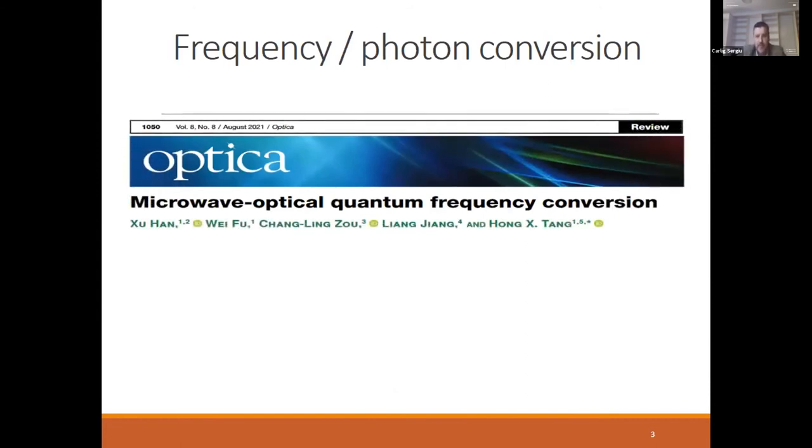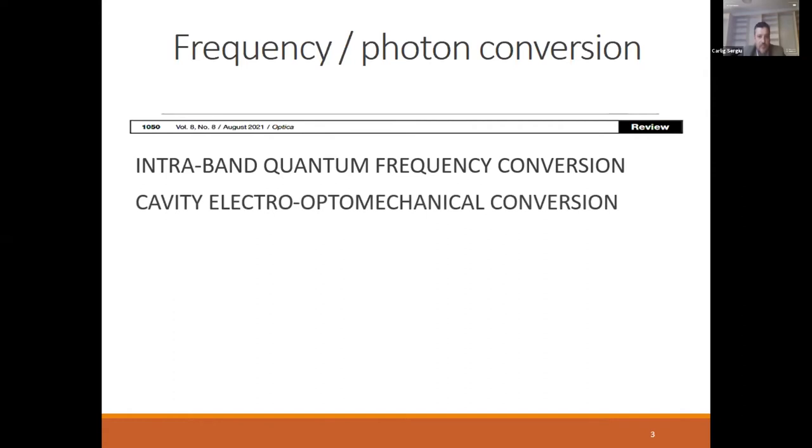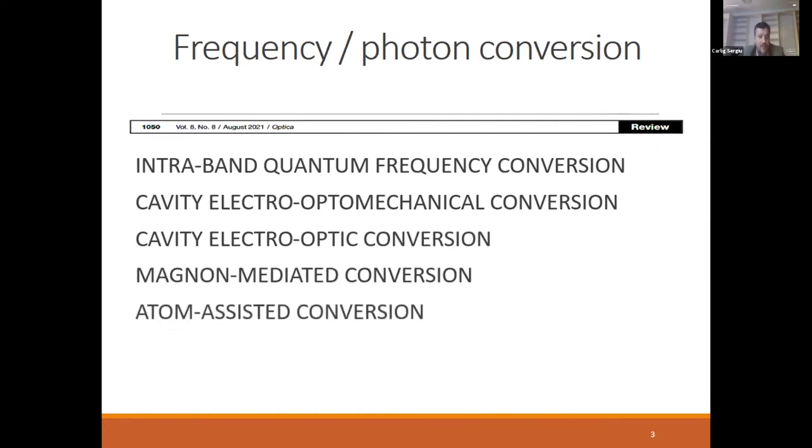A review for frequency conversion appeared in Optica in August, and the authors identified the main schemes that allow quantum conversion: intraband quantum conversion, cavity electromechanical conversion, electro-optic conversion, magnon-mediated conversion, and optomechanical conversion. In most cases, we see hybrid systems. Hybrid systems are interesting because they have many parameters, and we can change one of these to obtain interesting regimes at the output.